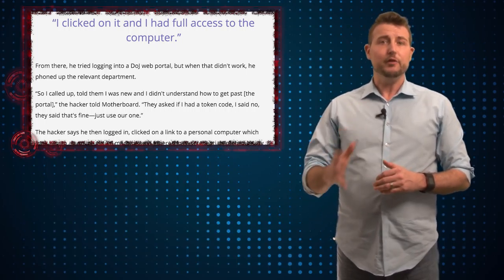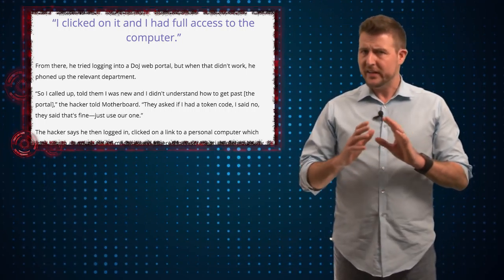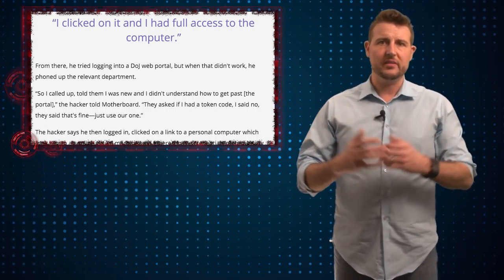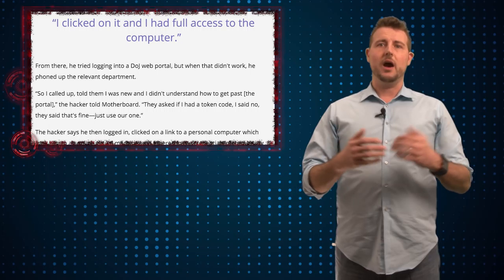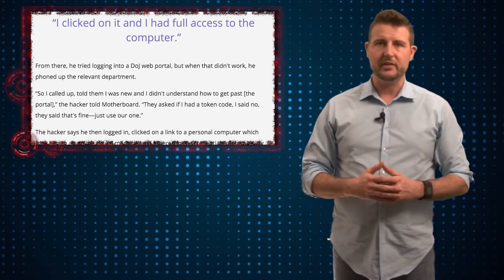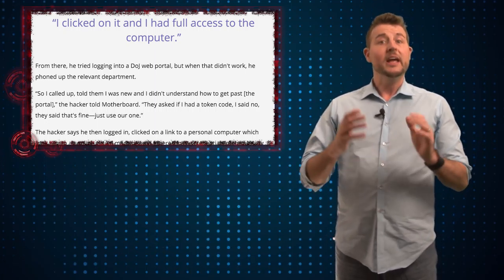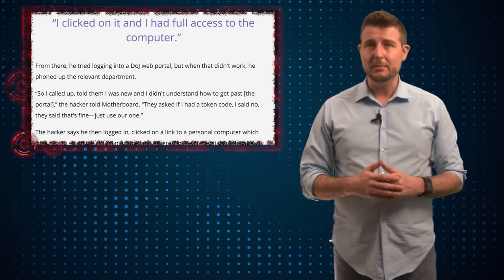According to him, he first gained access to a DOJ employee's email account. Now he does not say how. It could be lots of things, maybe he phished this particular employee, he could have guessed a common password, or maybe he used one of the passwords that are out in the public based on some sort of password breach. In either case, he somehow gained access to a DOJ employee's email address.